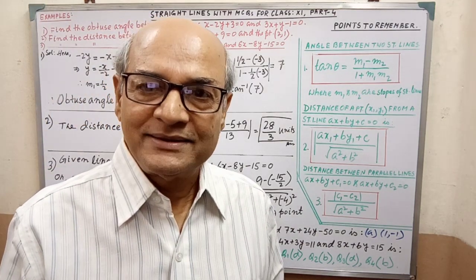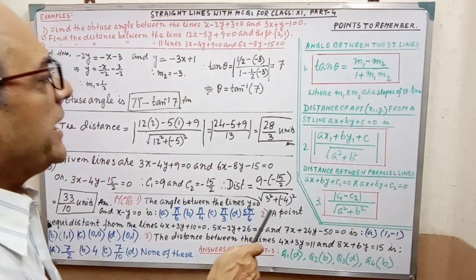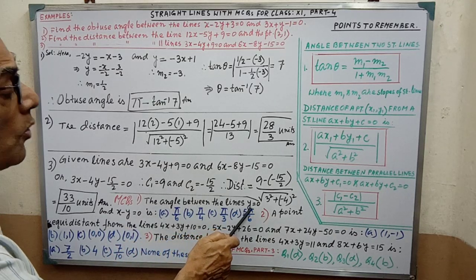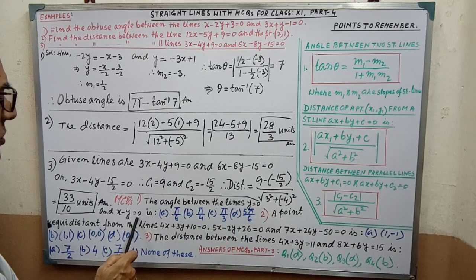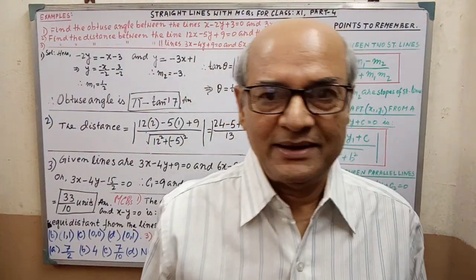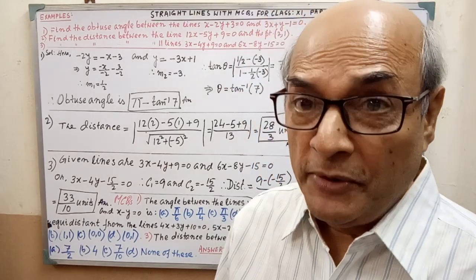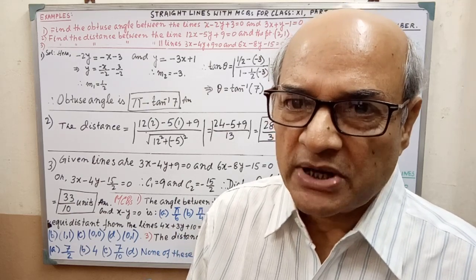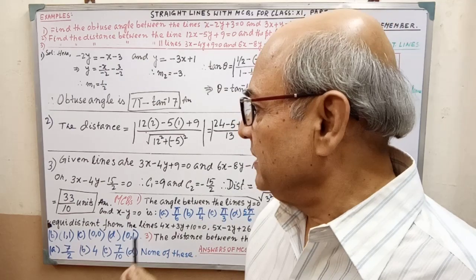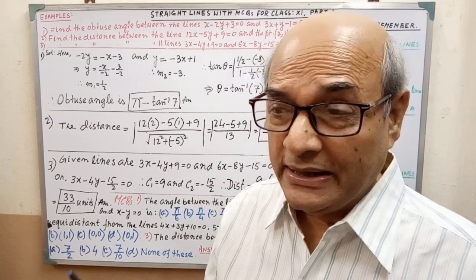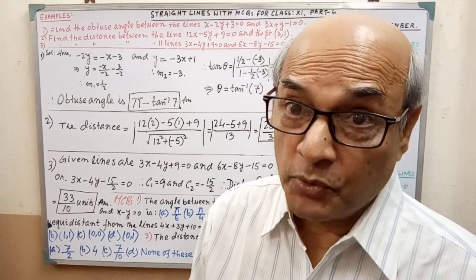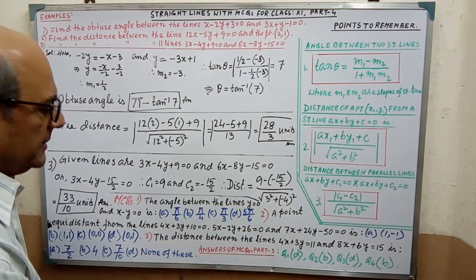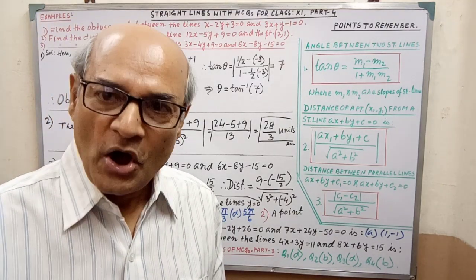These three formulas and three examples are now complete. Now three MCQs on these three topics are given. The first MCQ: find the angle between the lines y = 1 and x - y = 0, with four options. The MCQ pattern is well known to you — before selecting an option, read all four options very attentively because the options are very close to each other. After selecting the right one, mark it in the right position. Two more MCQs on this topic are also given.